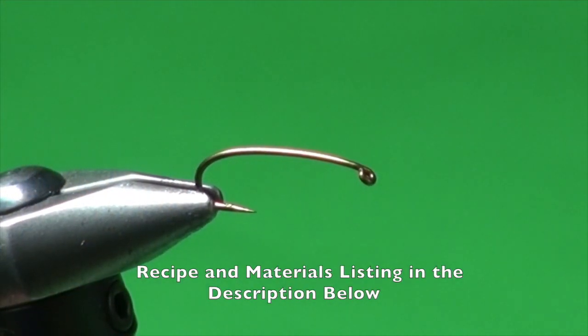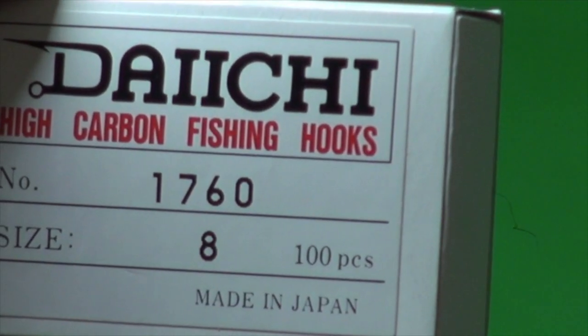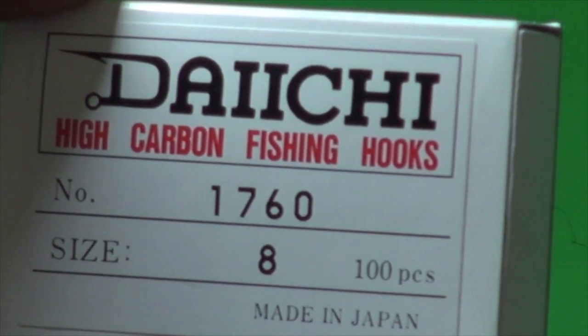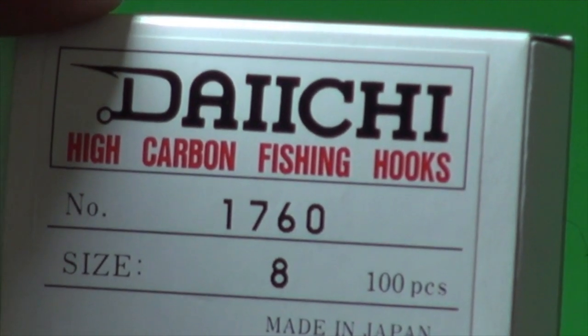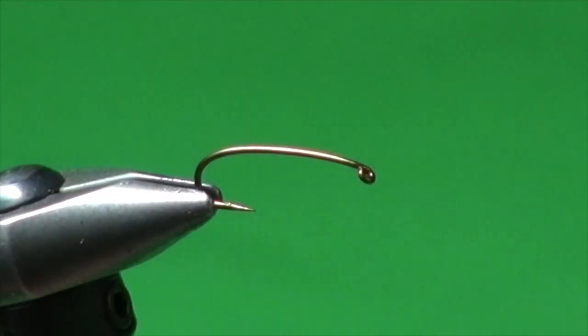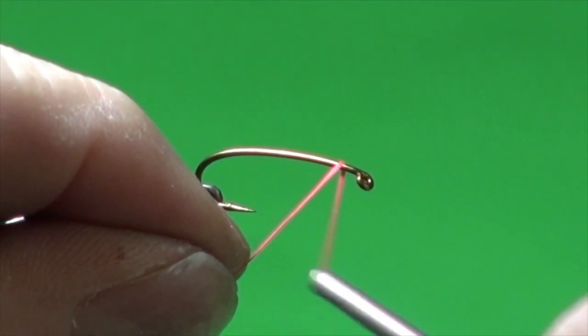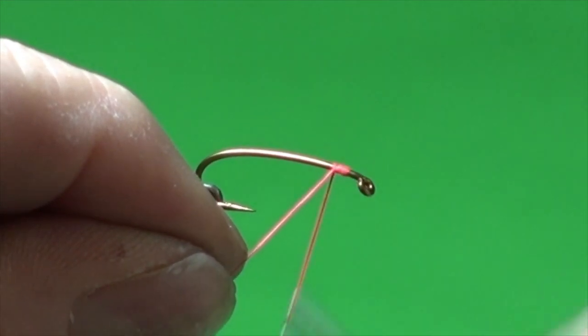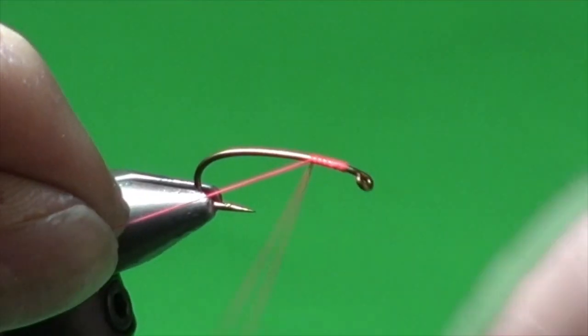So it's time to tie the Orange Crush. I'm going to tie this on a 1760 Daiichi number 8. You can tie them in 8s, 6s, 10s, 12 if you want. 8's a good size. I'm just going to use some UTC 140 thread. Just get a good thread base on here.